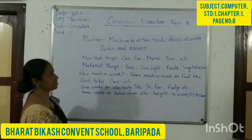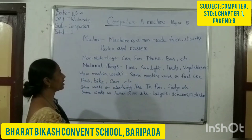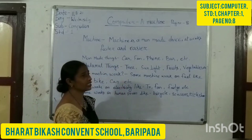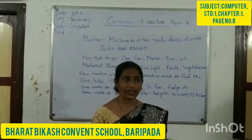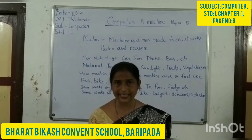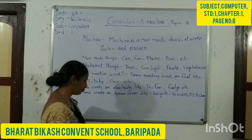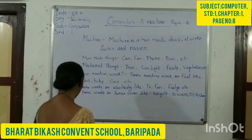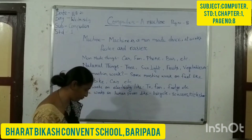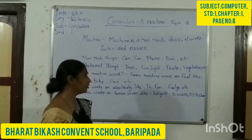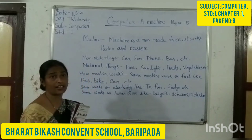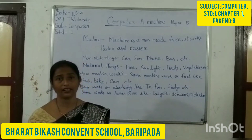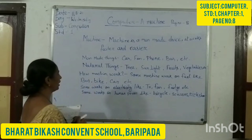So, a machine is a man-made device that works faster and easier. Man-made things are things that humans make to do their work faster and easier. Natural things are what nature gifts us — like sunlight, fruits, vegetables, and plants. Yes, all these are given to us by nature.